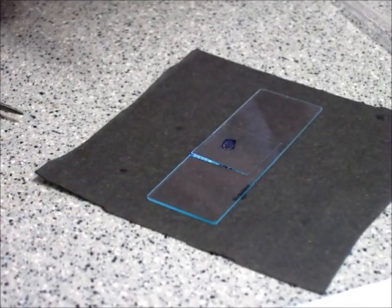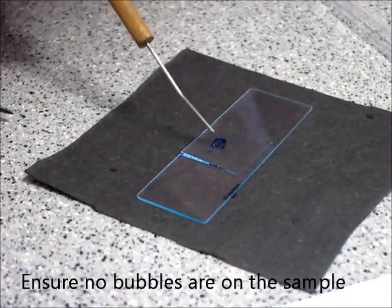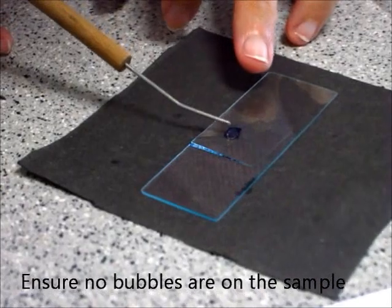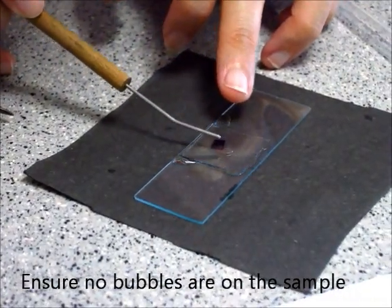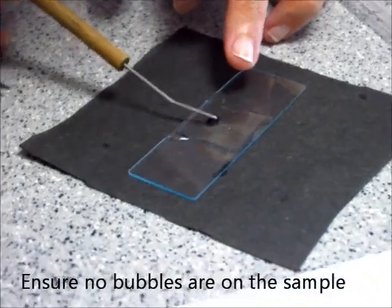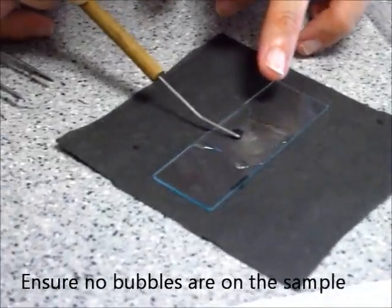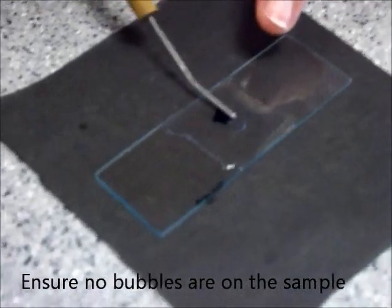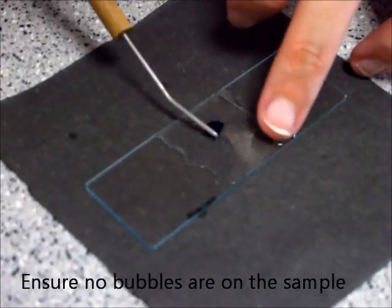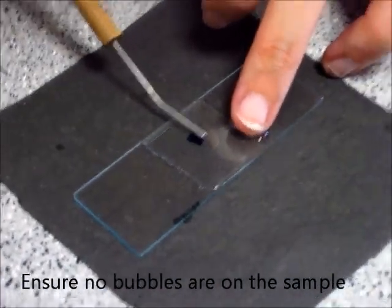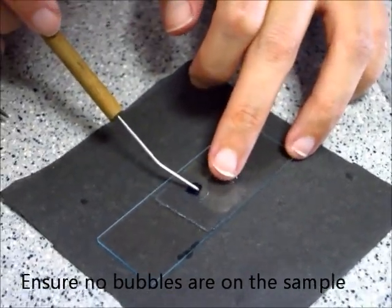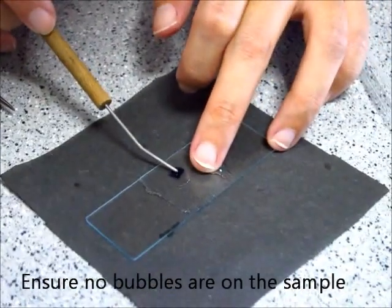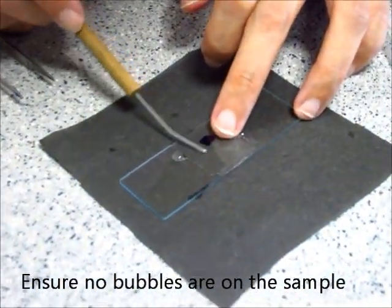But as you can see, even though I was very careful, there's one big bubble over here. So that doesn't matter. I just need to press a little bit, press the sample down a little bit. And you can see the bubble is moving away from the sample. So what is important is that the bubble is not on top of the sample. Let's try to get the bubble away. So now that we've gotten rid of the bubble, you can see there's a lot of water around.